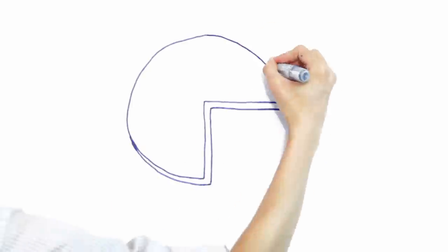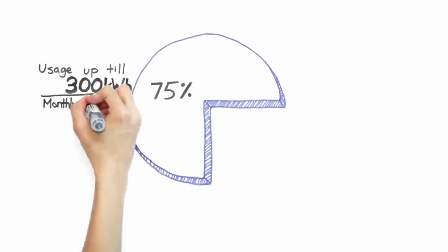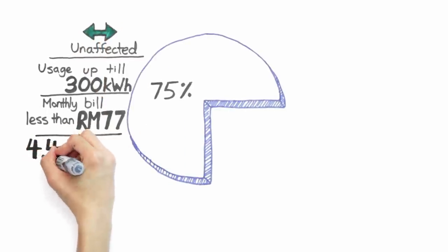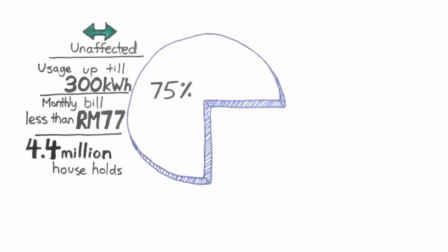In other words, households which use less than 300 kilowatt hour and have a monthly bill which is less than 77 ringgit will not be affected. That means 4.4 million households out of the 5.9 million in Malaysia will not experience any change.